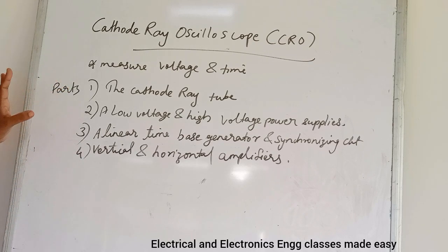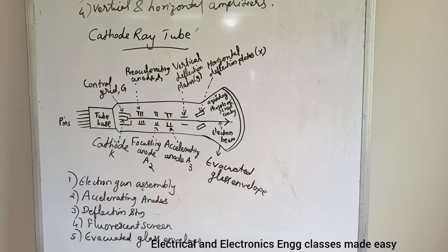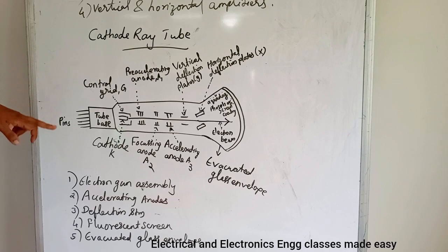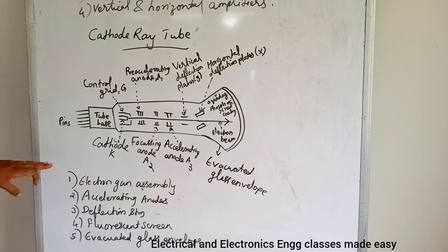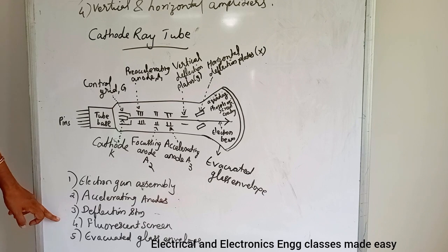The first and main part of the CRO is the cathode ray tube. The cathode ray tube is the heart of the CRO. The main components of the cathode ray tube (CRT) are: the electron gun assembly, accelerating anodes, deflection system, fluorescent screen, and evacuated glass envelope.